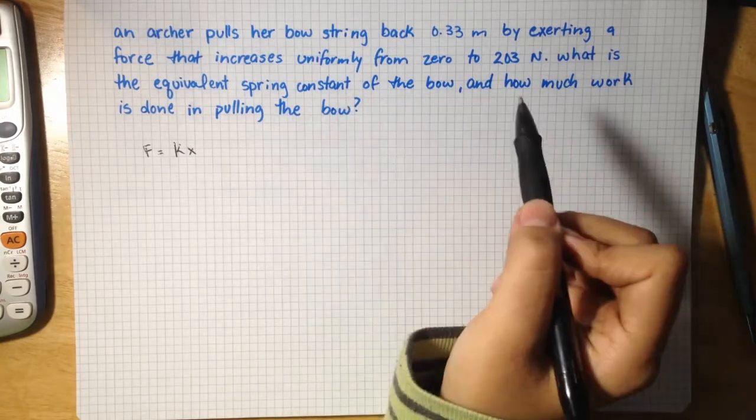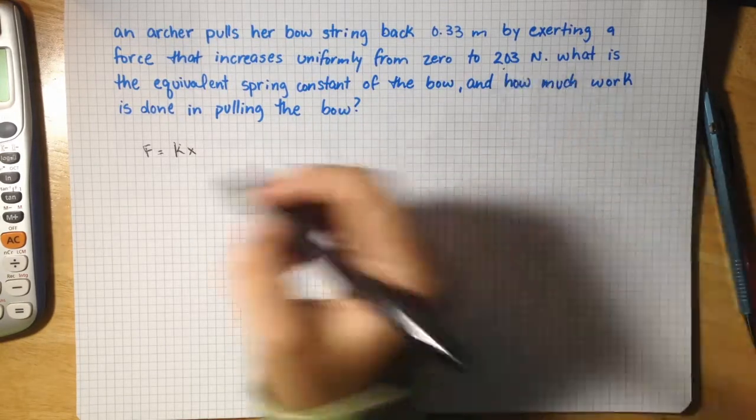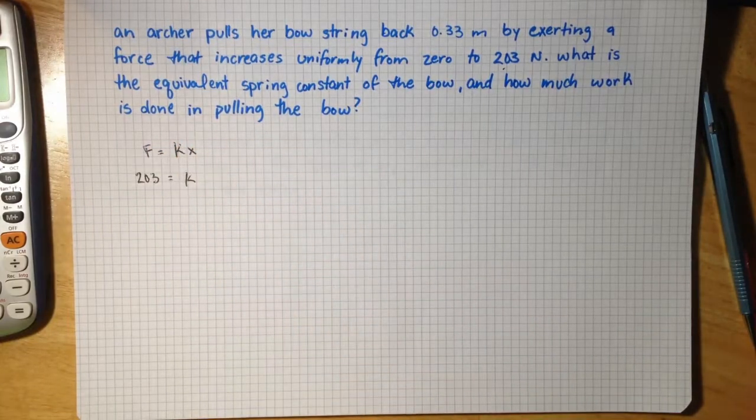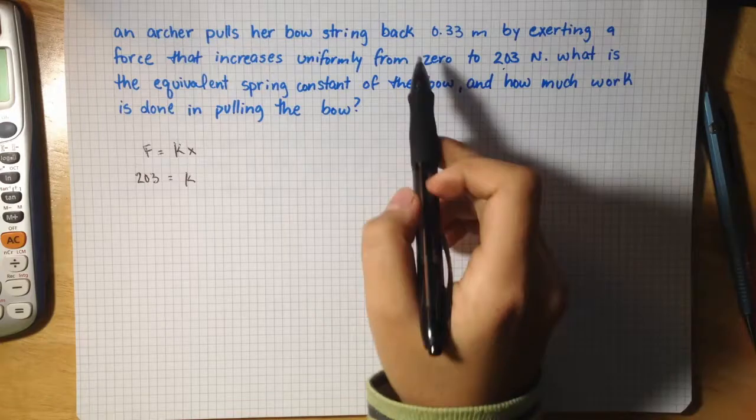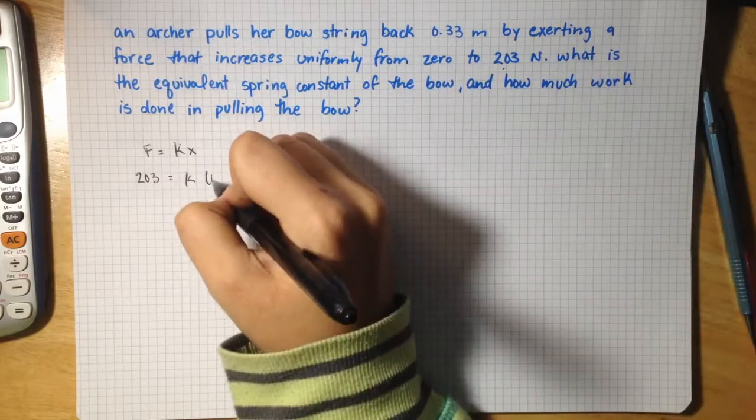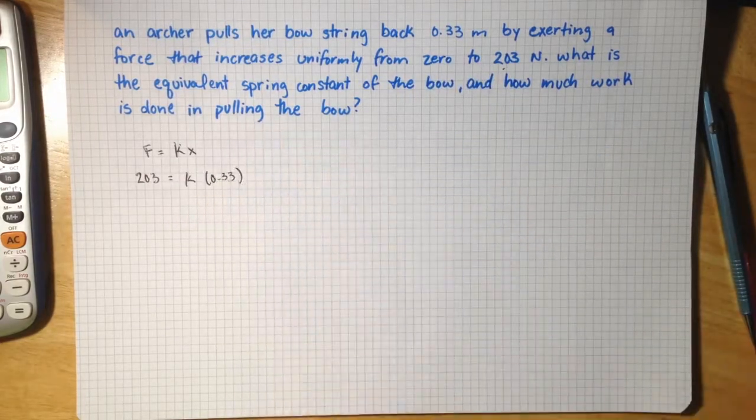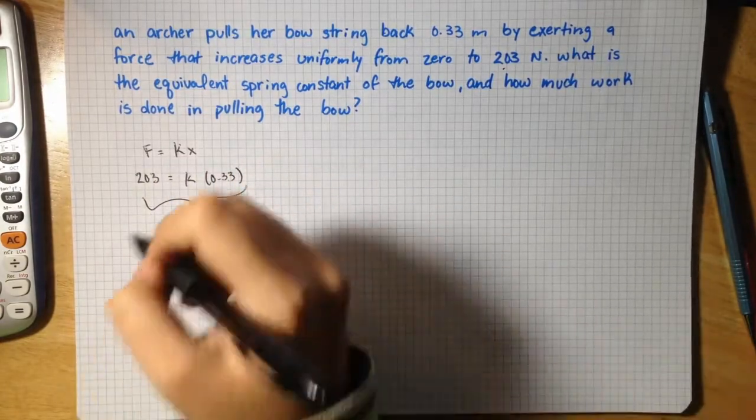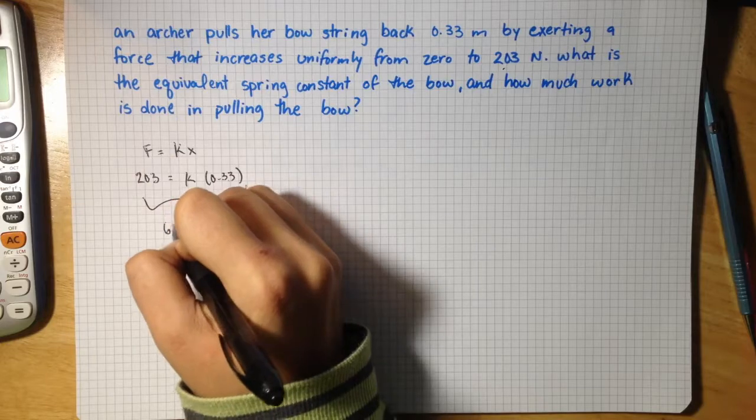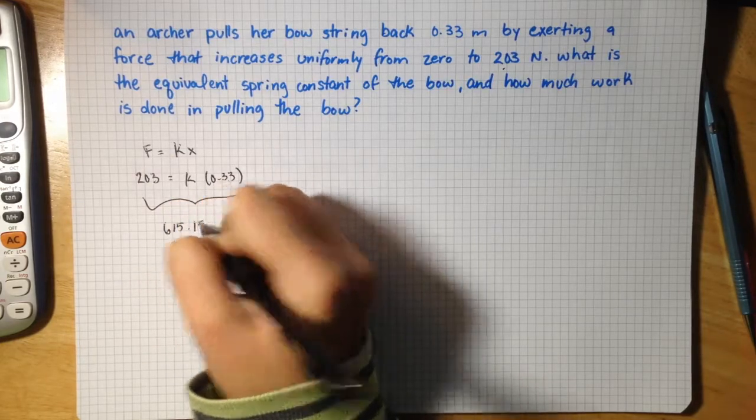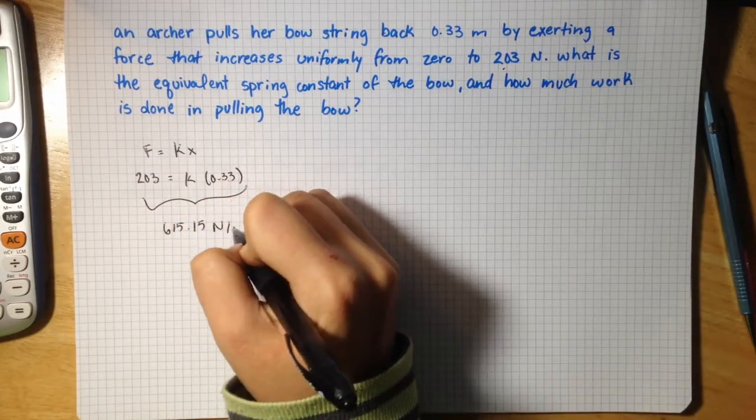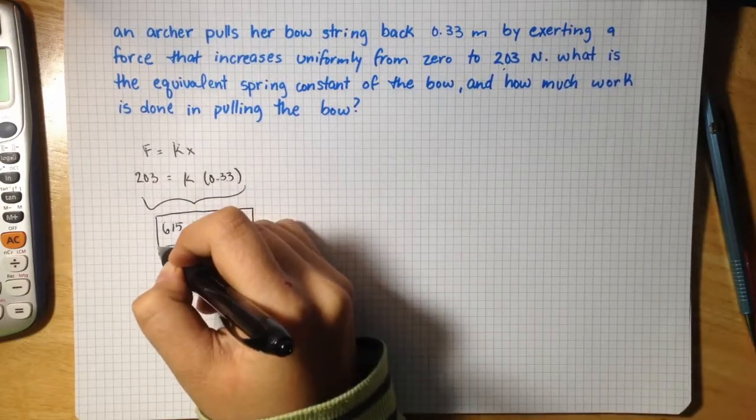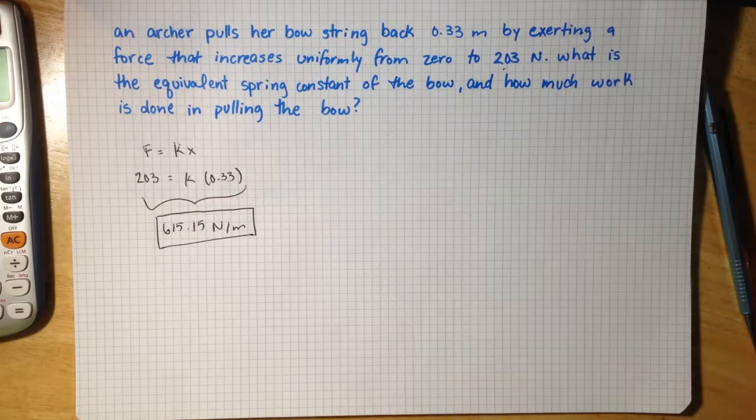So they give us that f equals 203 newtons, 203 equals k which we are finding, and x the distance is 0.33 meters. Solve for k, divide 203 by 0.33 and we get 615.15 newtons per meter as the spring constant of this archer's bow if we treat it as a spring.